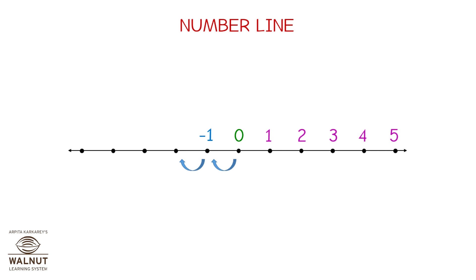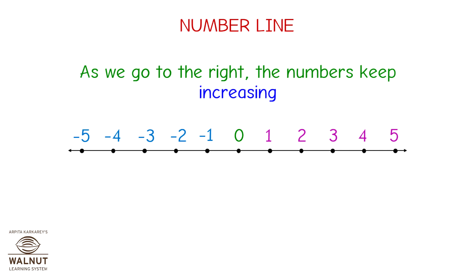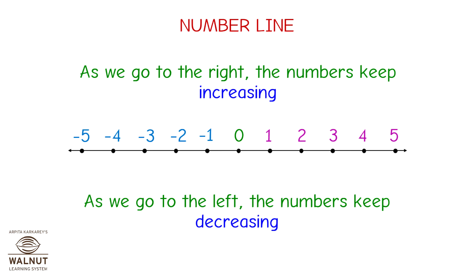We can go further to the left. That point is minus 2. We can go on doing that and we can have as many numbers as we want as we go more and more to the left. And as you can see, you have a line with numbers. This is called a number line. As we go to the right, the numbers keep increasing. As we go to the left, the numbers keep decreasing.